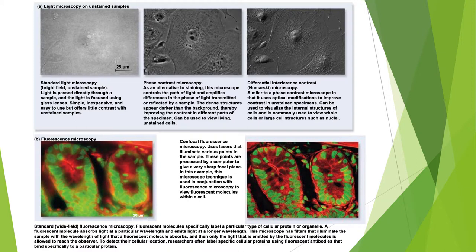Fluorescence microscopy lets you tag structures in a cell with a fluorescent label — here using green and red — to stain an organelle or a particular protein. You shine light on the cell and the fluorescent molecule re-emits light at a different wavelength, which you detect as a color. This allows you to see more detail than with standard light microscopy while still taking advantage of light. Confocal microscopy is a modification of fluorescence that provides much better resolution, as you can see comparing the left and right images.